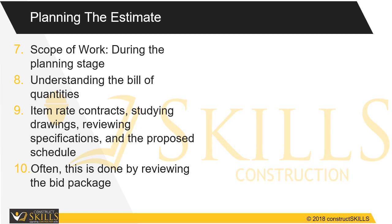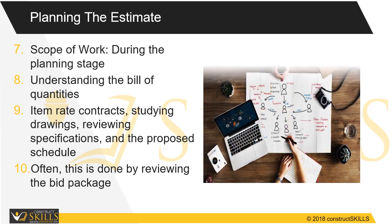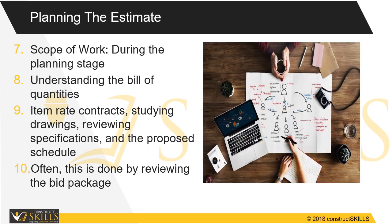This involves understanding the bill of quantities for item rate contracts, studying drawings, reviewing specifications, and the proposed schedule. Often, this is done by reviewing the bid package and identifying which of the company's cost codes are needed for the project and what pricing needs to be obtained to complete the estimate.